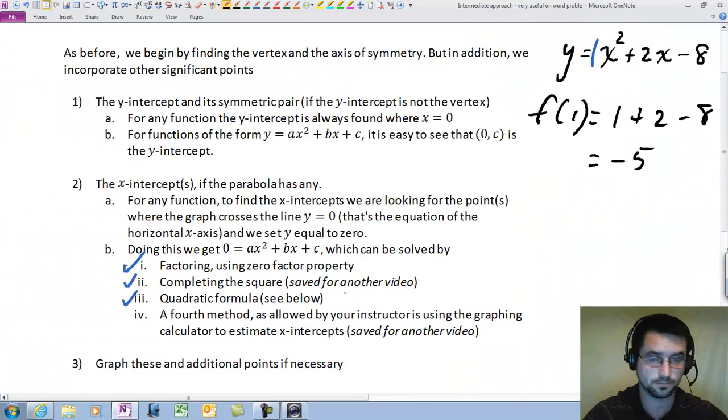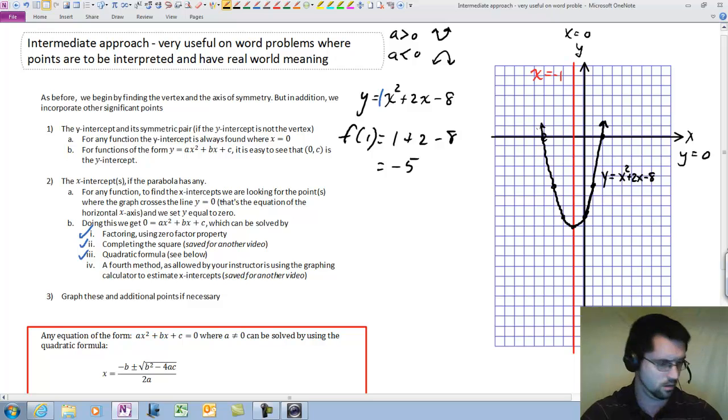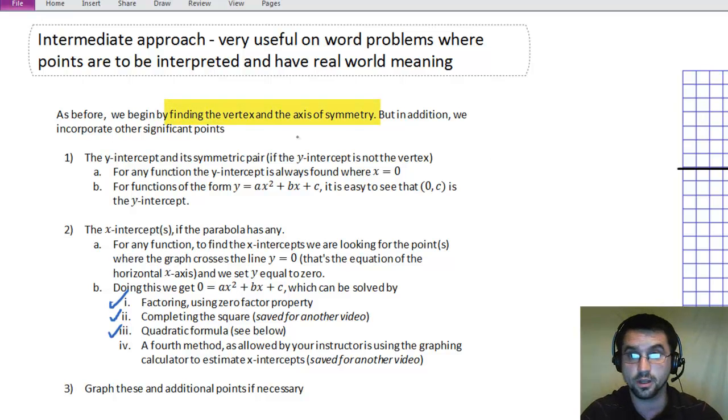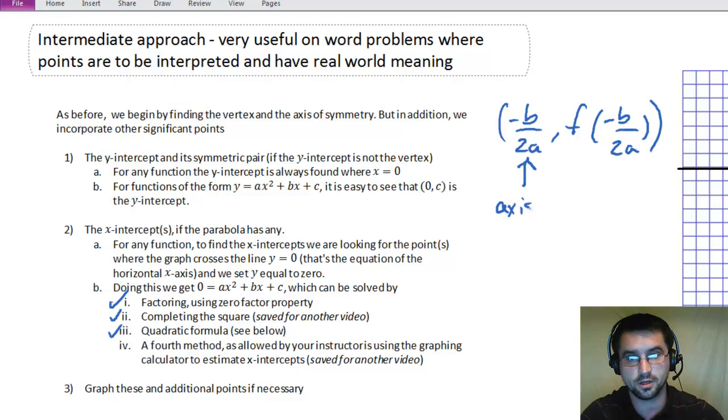First thing. If we're graphing a parabola using this method, we're going to start by finding the vertex and the axis of symmetry. And we do that by getting this, comma, this. Where the first part is our axis of symmetry, and the whole thing is our vertex. Having found that, we then get a y intercept.